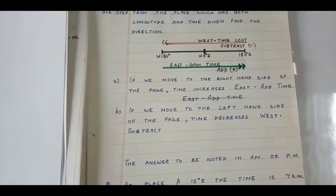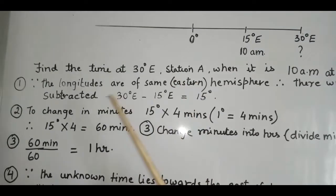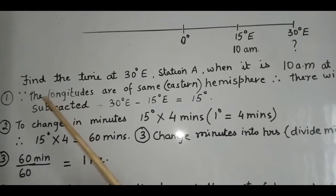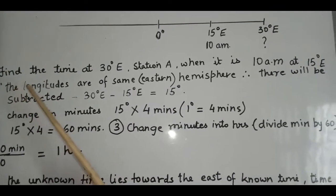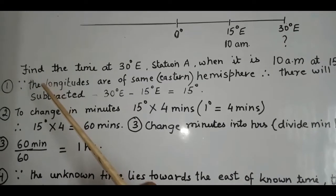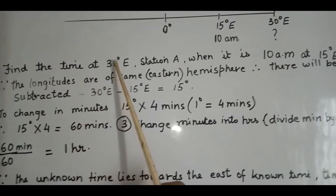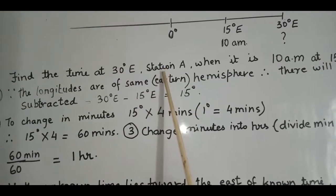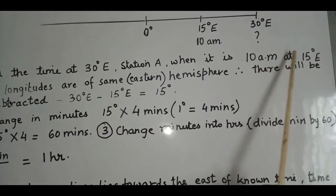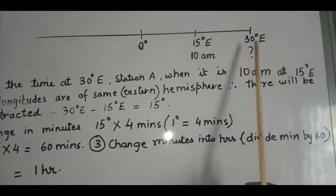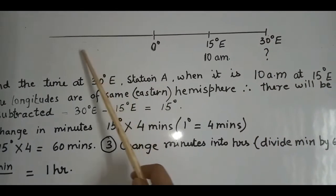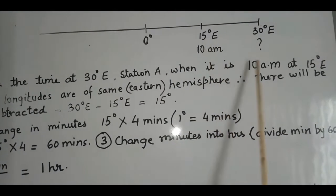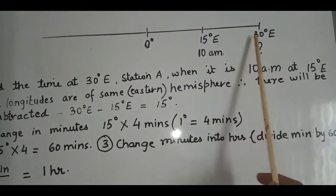We'll solve some time sums. Let's do some examples to see whether you have understood the concept. The question is: find the time at 30 degrees east when it is 10 AM at 15 degrees east. The first step is to draw a line and write 15 degrees east with the time 10 AM, and 30 degrees east as the unknown.